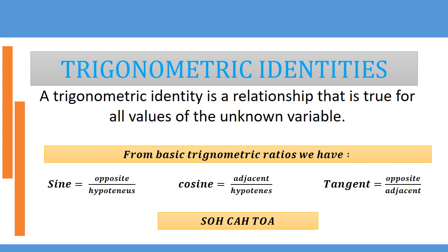From basic trigonometric ratios, we have sine given by opposite over hypotenuse, cosine given by adjacent over hypotenuse, and tangent given by opposite over adjacent. We have the formula known as SOH-CAH-TOA — a very common formula — and this basically just illustrates these three ratios.